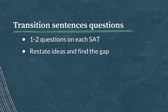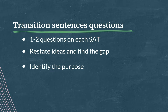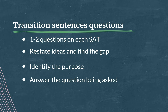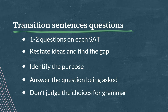Here are some top tips for a transition sentence question. First, restate ideas and find the gap. Summarize the information before and after the transition sentence — if we notice any obvious gap, then we can look for a choice to fill it. Next, identify the purpose. What's the purpose of the information you're transitioning to? Does it support or counter an argument? If so, the best transition will restate that argument, either for a reminder or to generate contrast. Is it the answer to a question? If so, the best transition might restate that question. Then, answer the question being asked — there are going to be some choices that look very tempting because they're related to the topic, but focus on what the question is actually asking: what's the best transition? And finally, don't judge the choices for grammar. Every choice will be grammatically correct, so don't think like a copy editor. You're trying to choose the best transition between ideas.